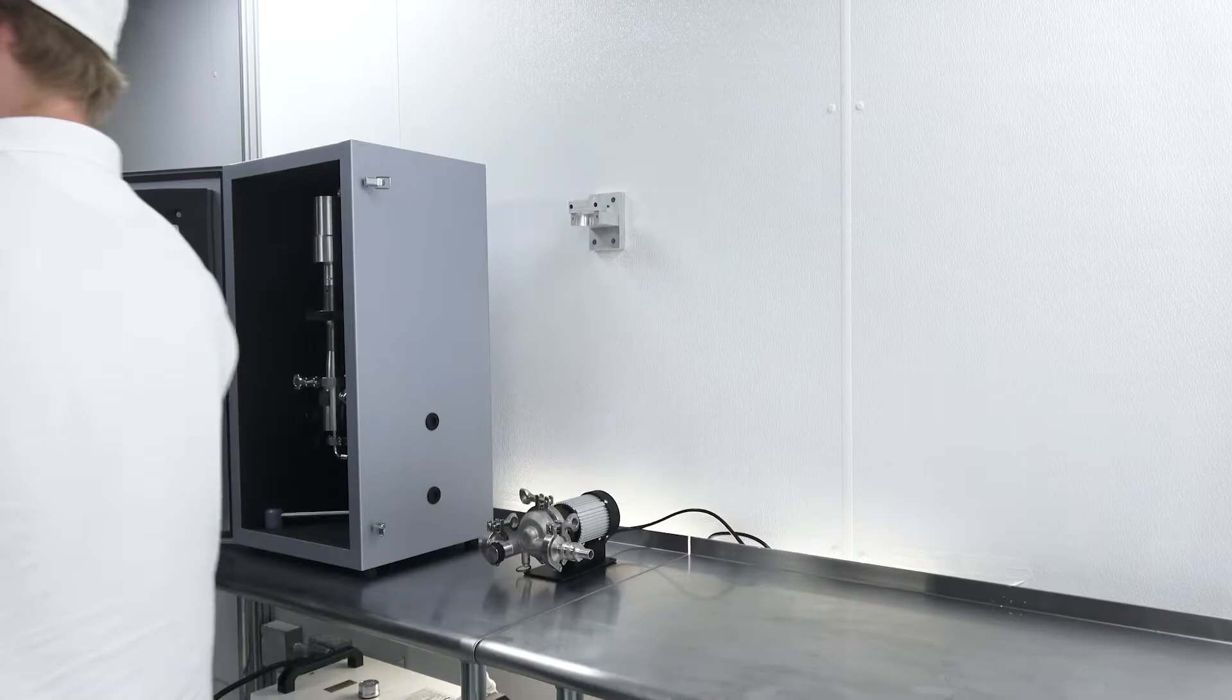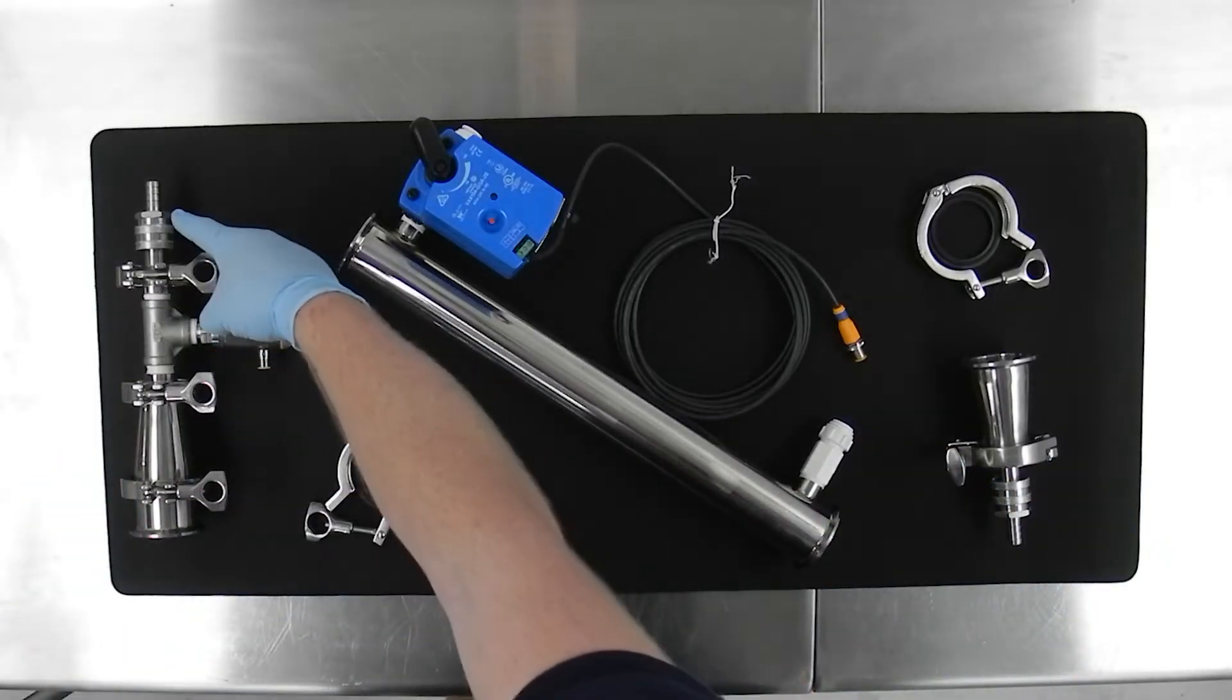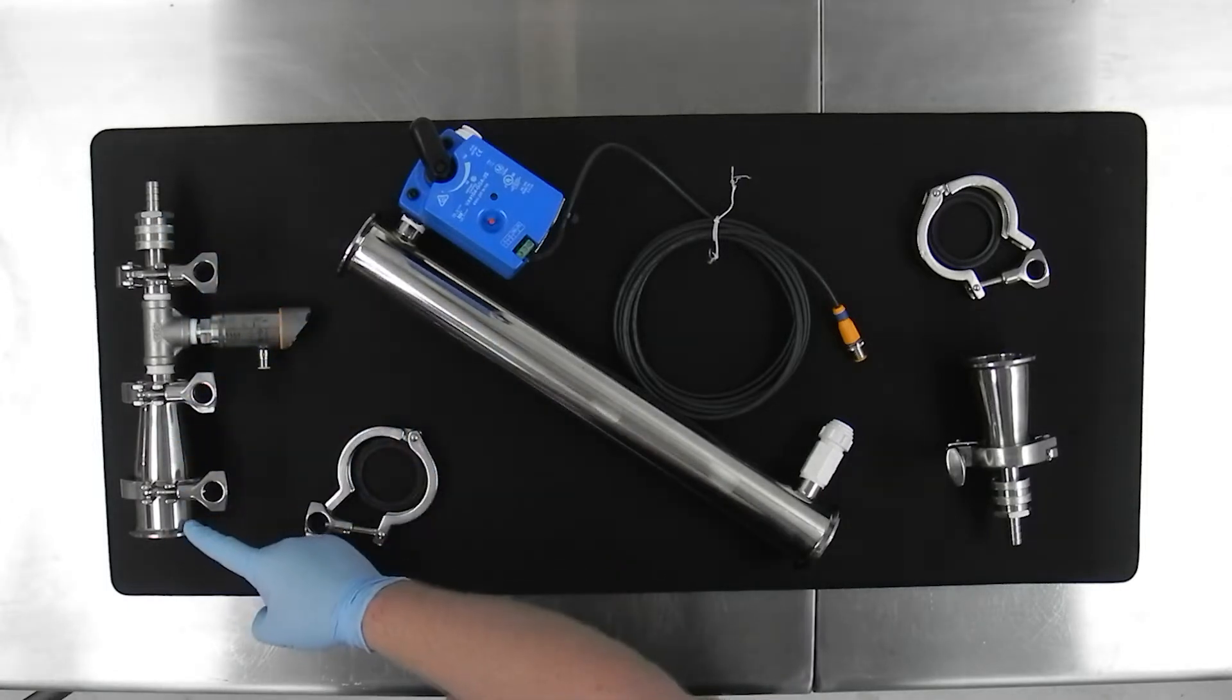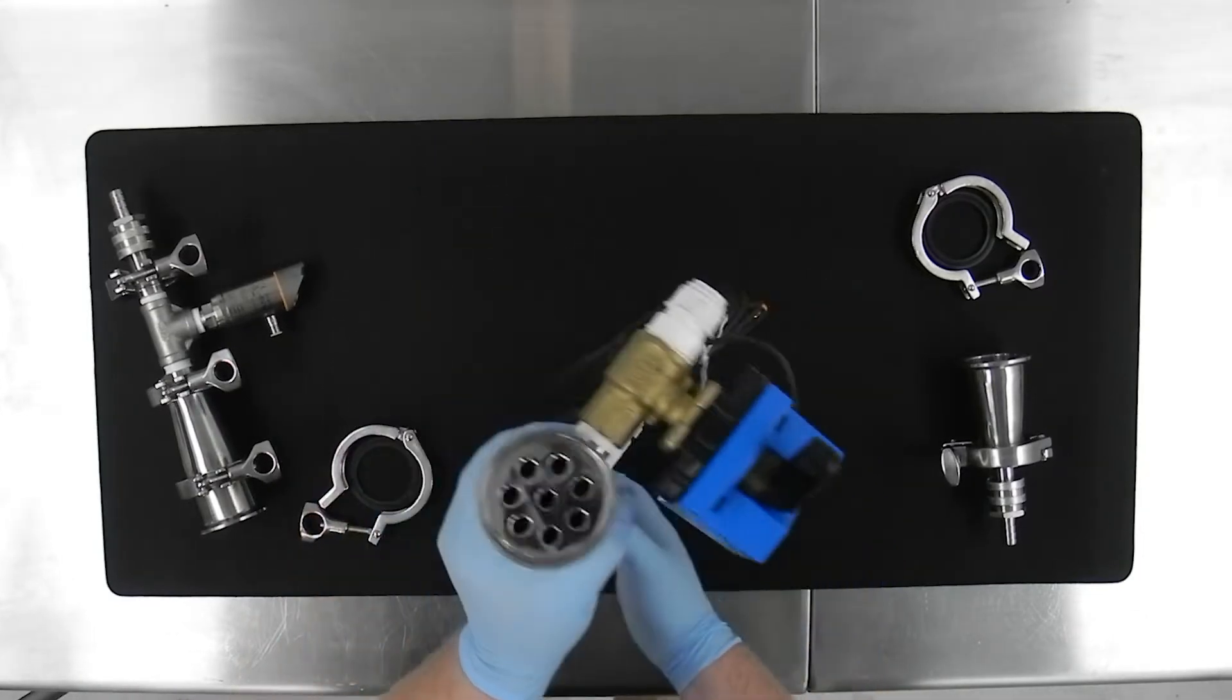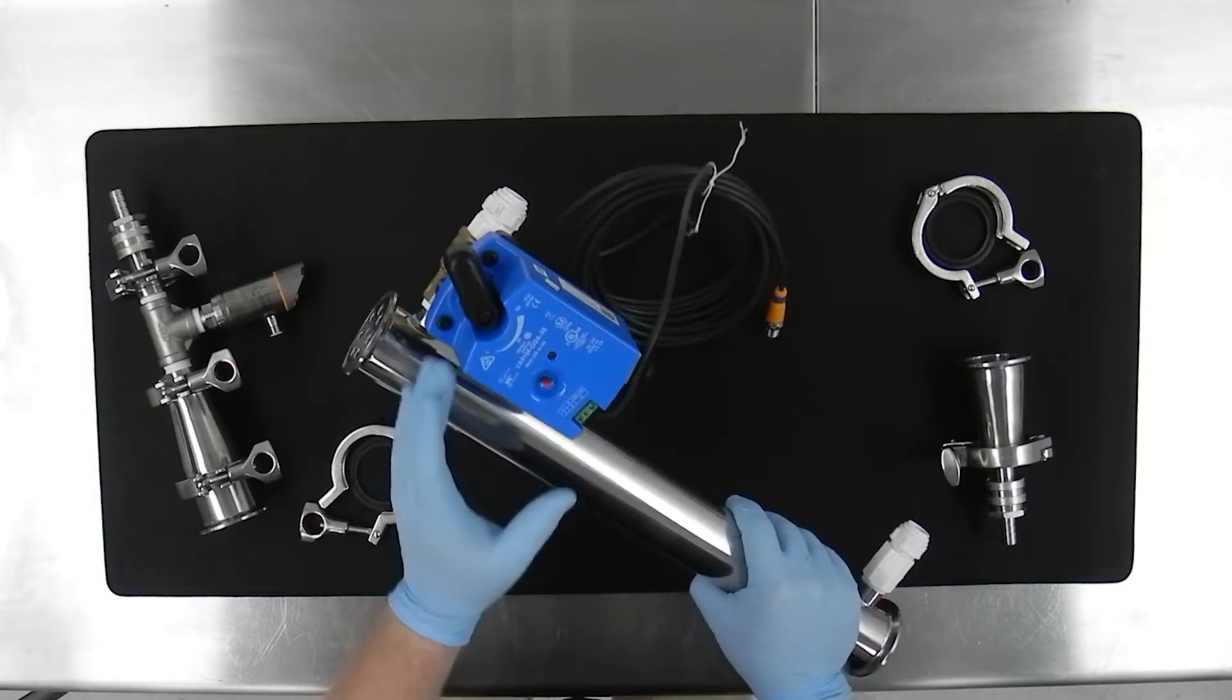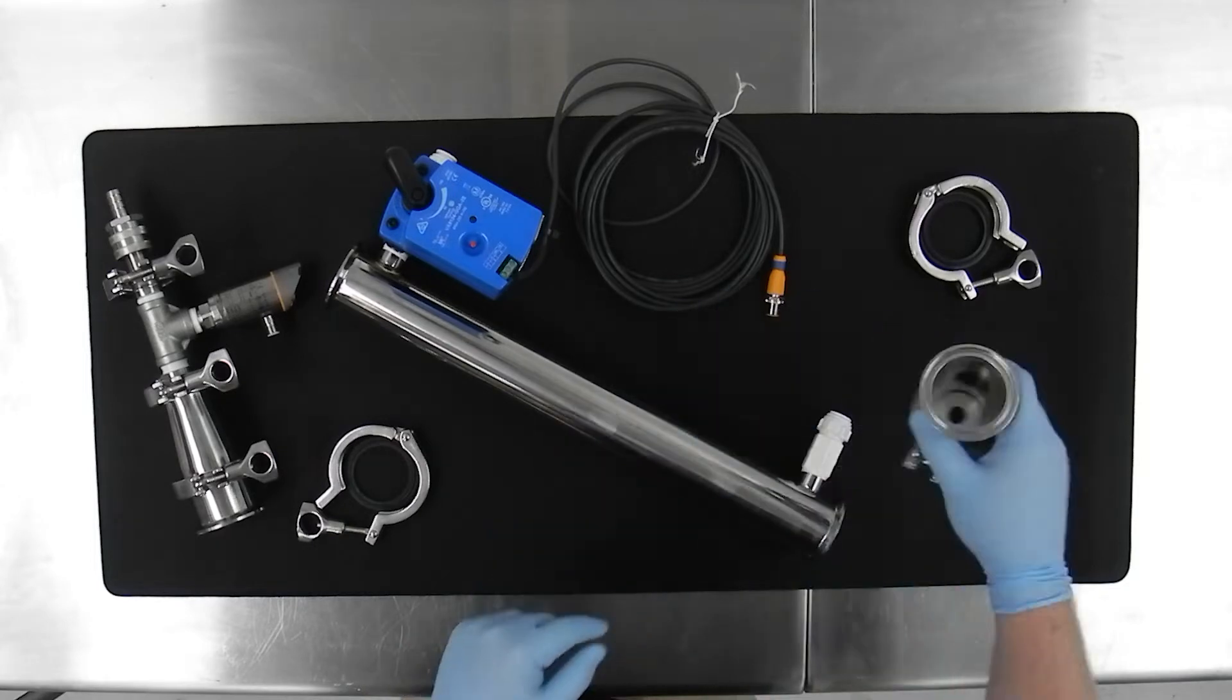Next we assemble the heat exchanger. We have the top assembly with quick disconnect, flow meter, and flow diffuser, several triclamps, and we have the heat exchanger body along with flow control valve, and then we have the bottom assembly with flow diffuser and quick disconnect.